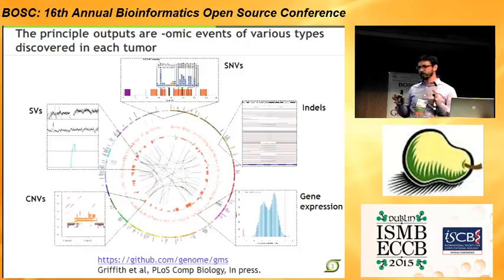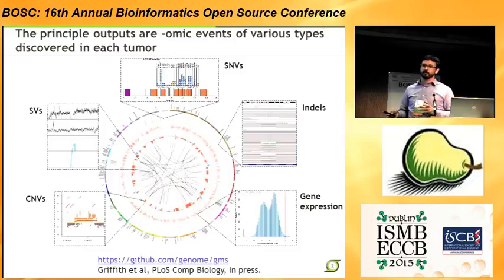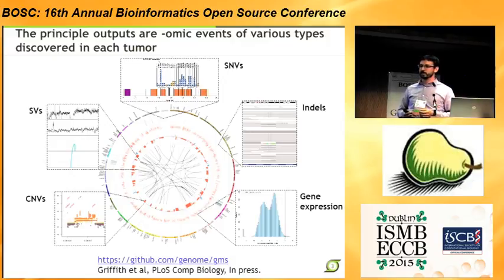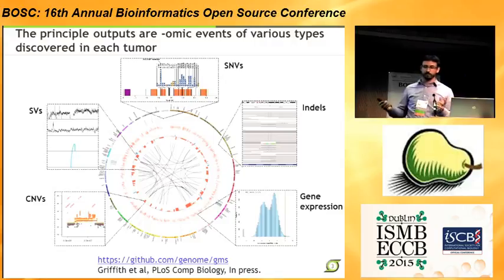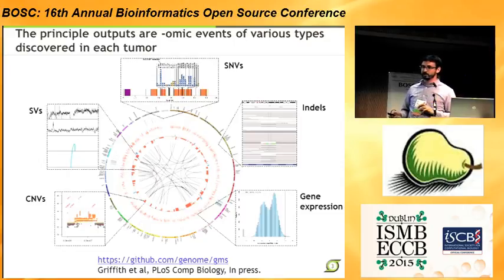Just to put this in more context, the output of all of this sequencing, at least in the context of cancer, are generally OMIC events — molecular events, mutations, variants. They fall into certain categories like single nucleotide variants, small insertions and deletions, overexpressed genes from RNA-seq, copy number aberrations, and structural variants like rearrangements and fusion genes. We've spent a lot of time automating that and becoming quite good at detecting these different types of mutations in tumors.